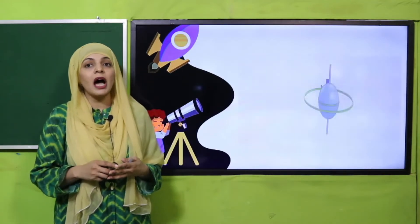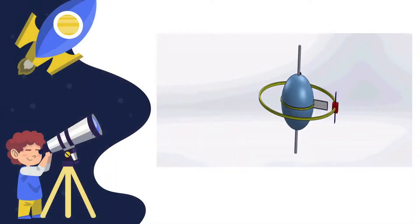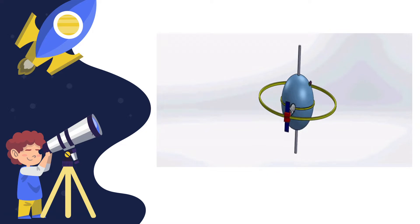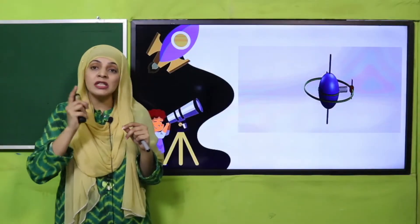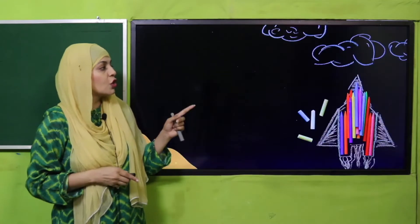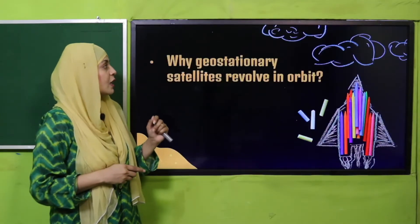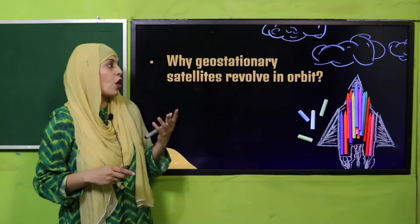Now it's time for an activity. Look at this picture very carefully. Here you can see a geostationary satellite, which spins with the Earth and orbits around it. It is orbiting around the Earth at the same speed as the Earth's spin. This is called a geostationary satellite, as you can see here.